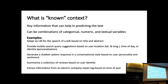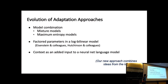Adaptation has been a problem people have worked on for decades. It started with model combination, mixture models, and maximum entropy models. A few of us looked at log-bilinear models and tried to factor parameters to account for different factors — that was my early work with the Supreme Court data. More recently, people have looked at having context as an added input to a neural network. What we're going to do is take that idea, but rather than an input, the context is going to control a transformation of the weight matrix.